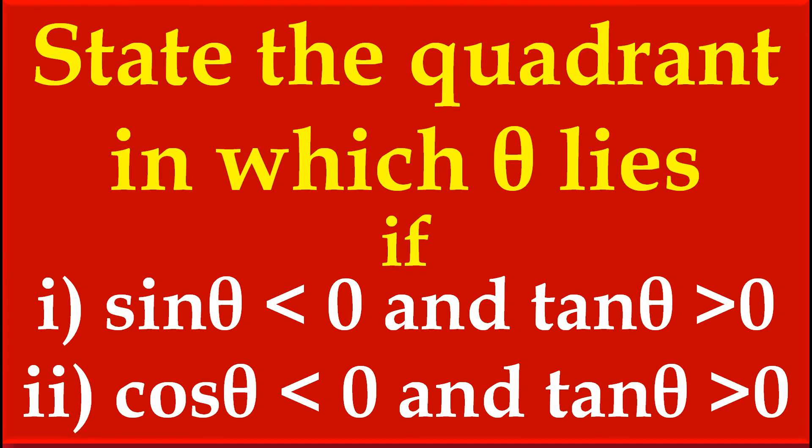Friends, now we have to state the quadrant in which theta lies. First condition: sine theta is less than 0 and tan theta is greater than 0. Second condition: cos theta is less than 0 and tan theta is greater than 0. We have to find the quadrant in which angle theta lies in these two separate conditions.